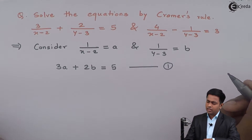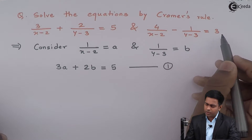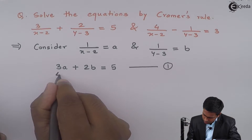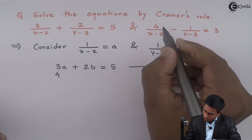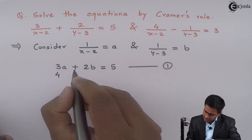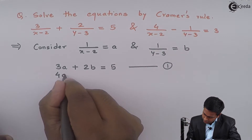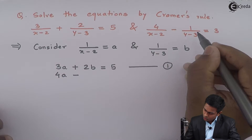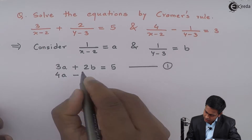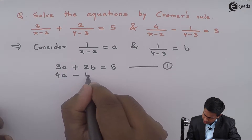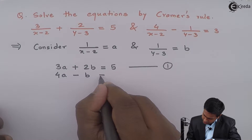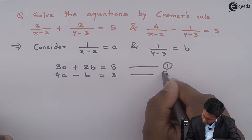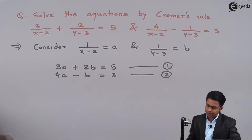The second given equation will become: 4 into 1 upon (x minus 2) is A, so 4A, minus 1 upon (y minus 3) is B, so minus B, equal to 3. This is equation number 2.